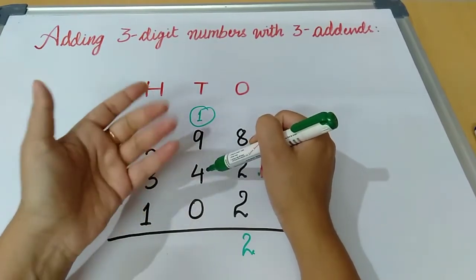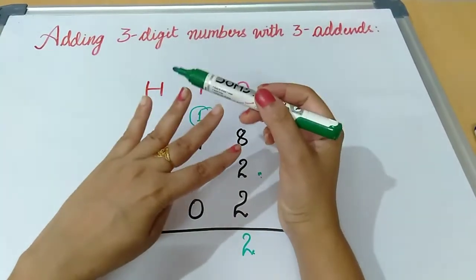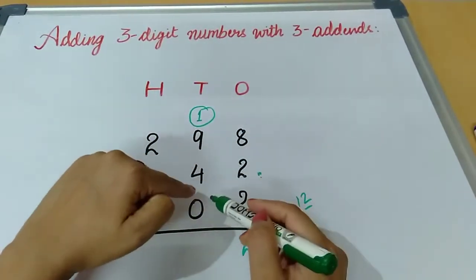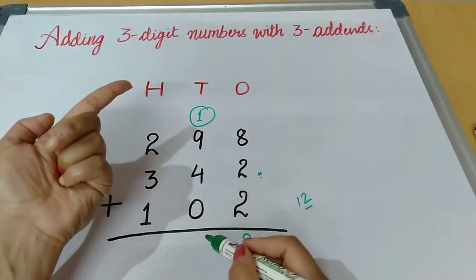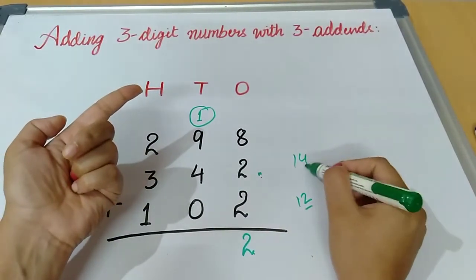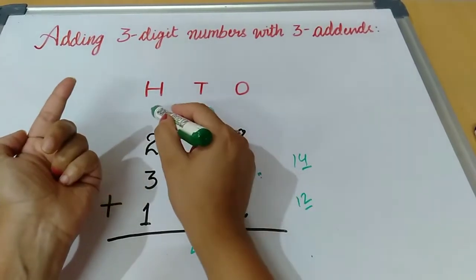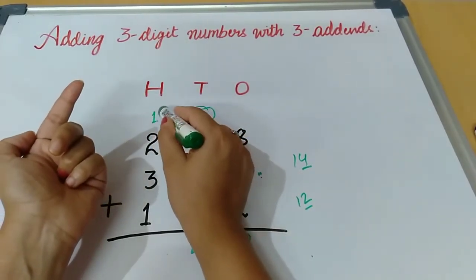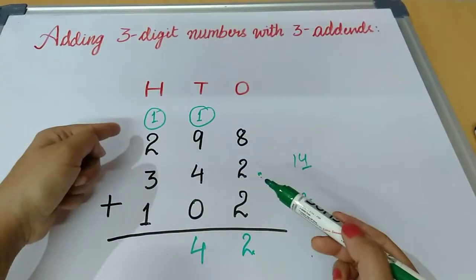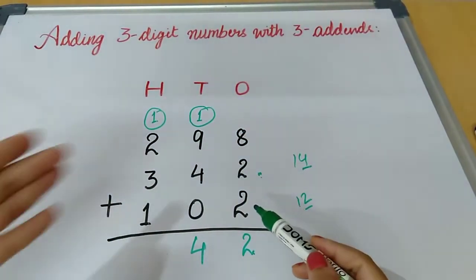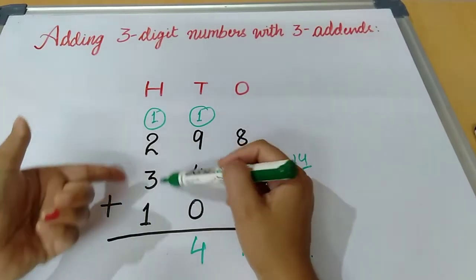Ten plus four: count four fingers — eleven, twelve, thirteen, fourteen. So we get fourteen. Fourteen's four you have to write at the tens place and one will be taken as carry to the next column. You can add the numbers first and add the carry afterwards, or you can add the carry along with the first number.